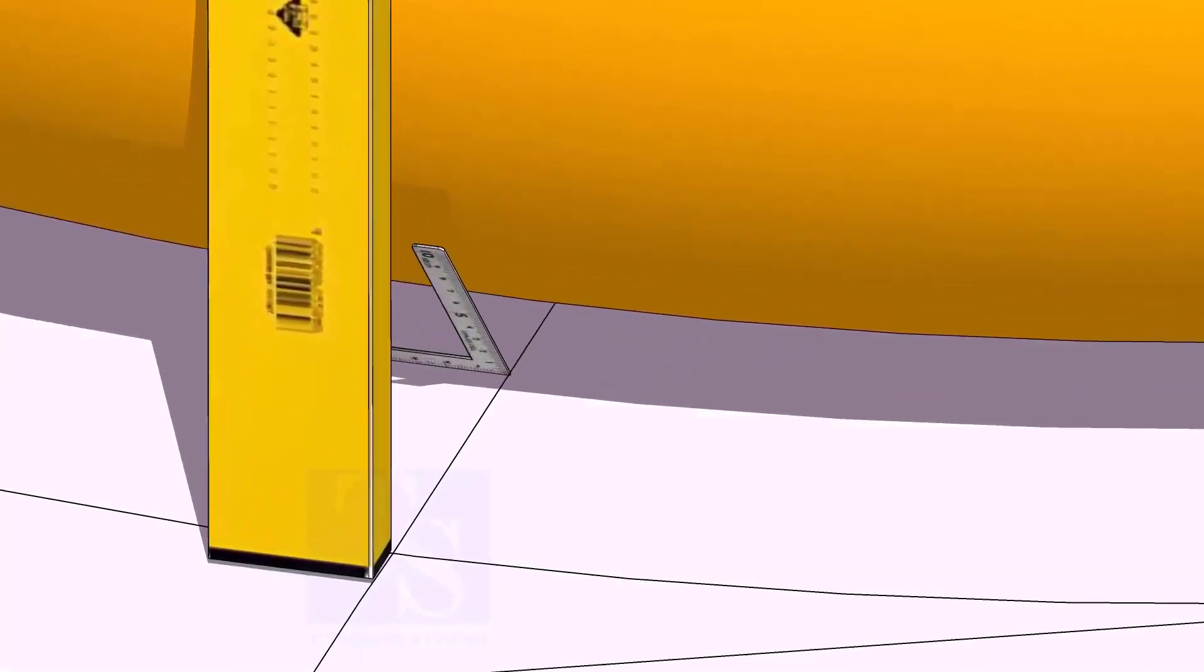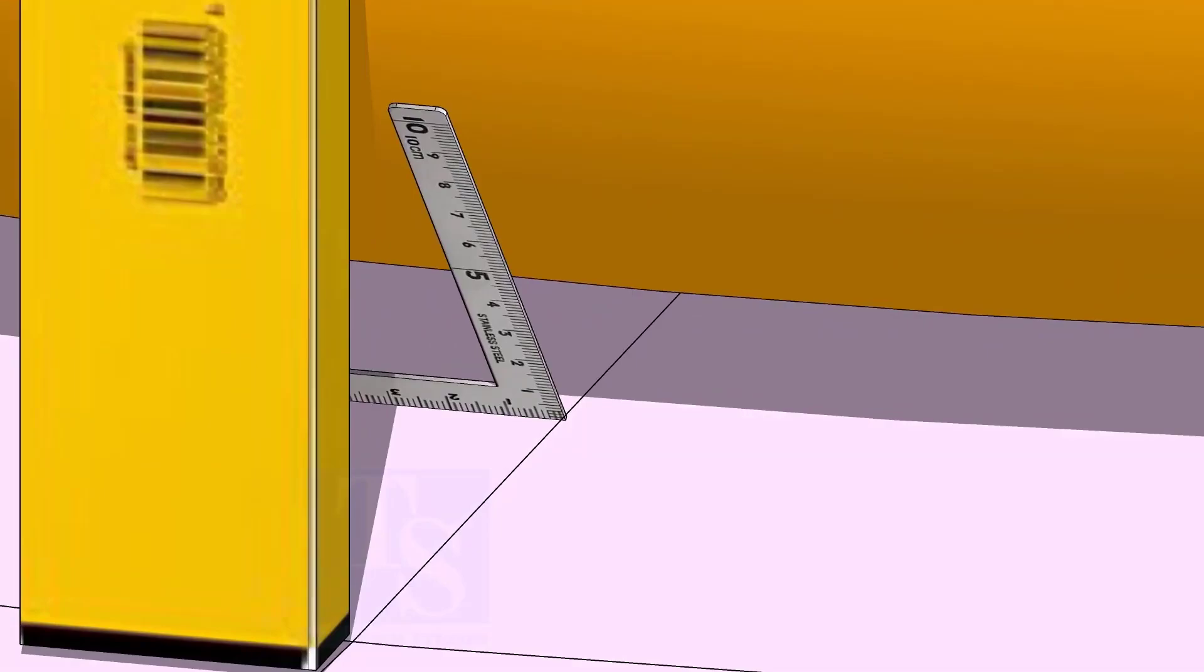At the bottom side, use a small right angle and transfer the line to the elbow on both sides.